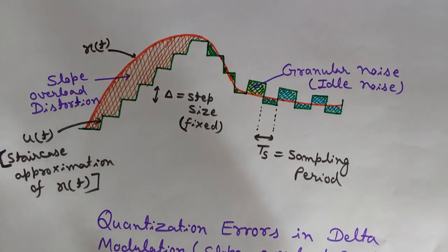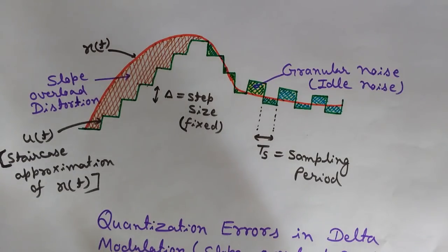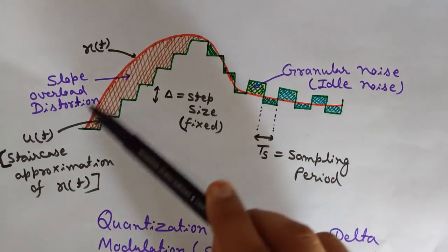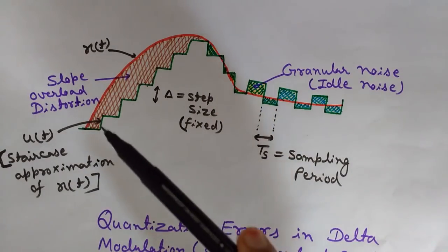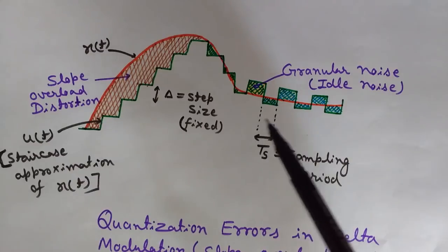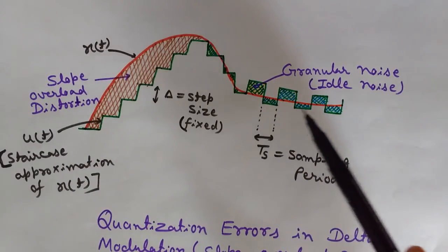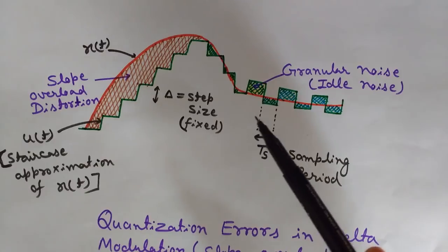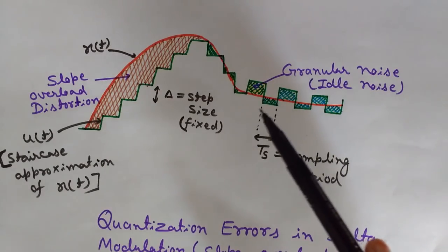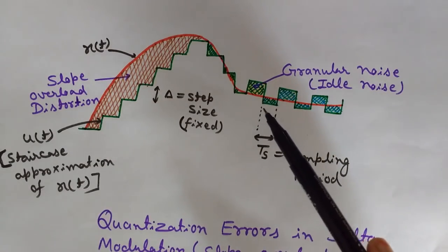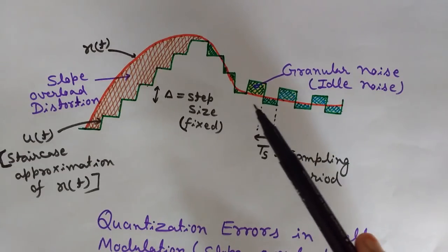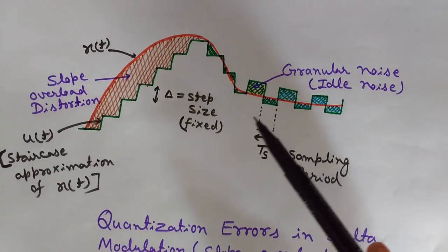This is the main problem of delta modulation, which is why we use adaptive delta modulation. It is called adaptive because in adaptive delta modulation we do not have a fixed step size — we adapt the step size according to changes in the input signal. If the signal is rising very steeply, we increase the step size, and if the signal has a constant value or is varying at a very low rate, we decrease the step size.